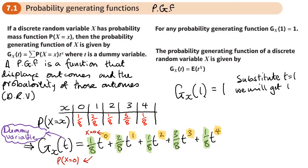Another use for the probability generating function is that if we differentiate it, it allows us to find the expected value E of X and the variance of X. So the PGF first displays probabilities and their outcomes, and later we'll see that differentiating it allows us to work out E of X and Var X.